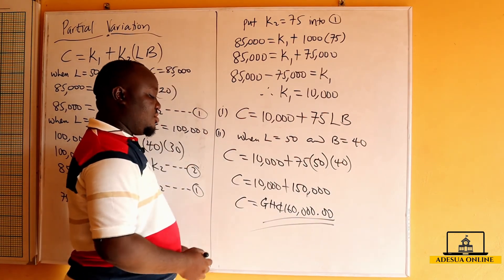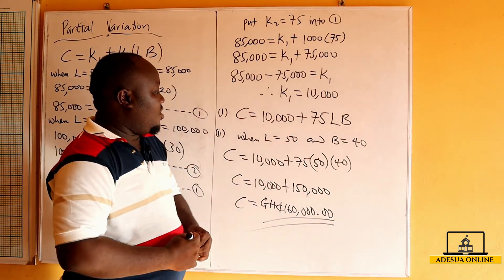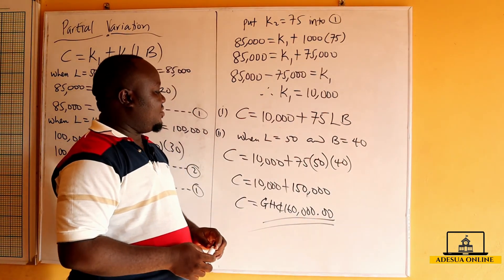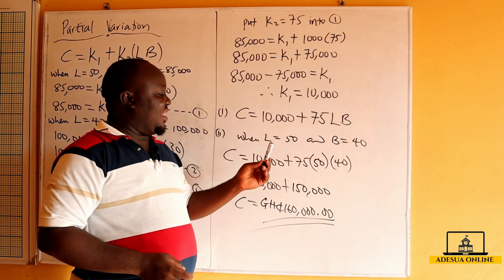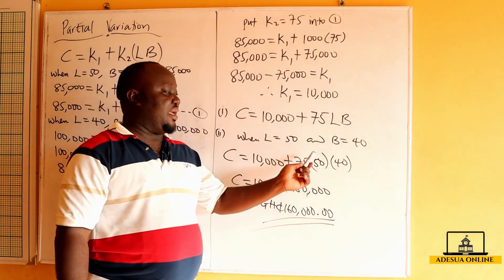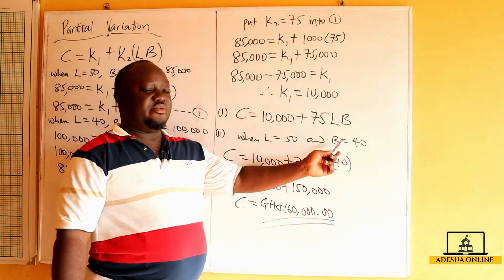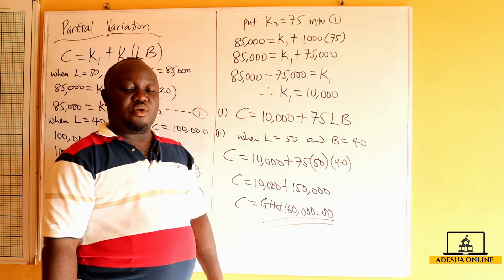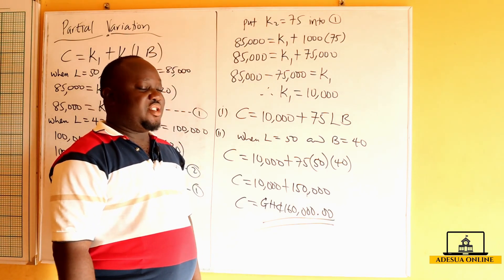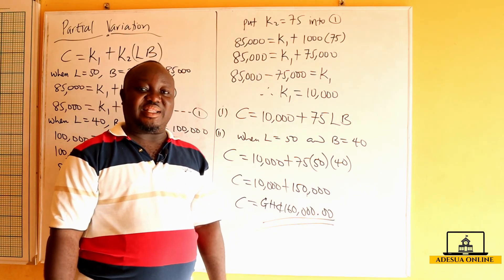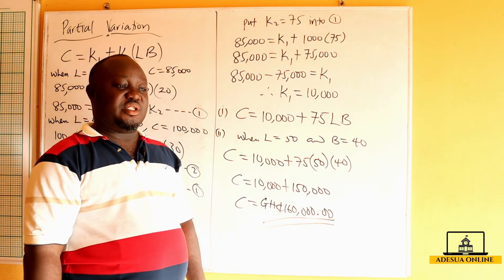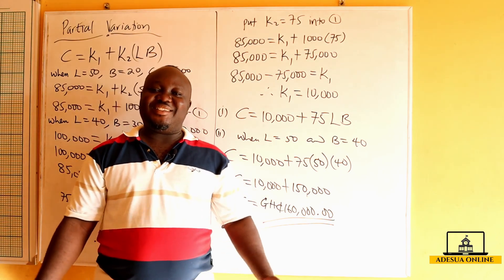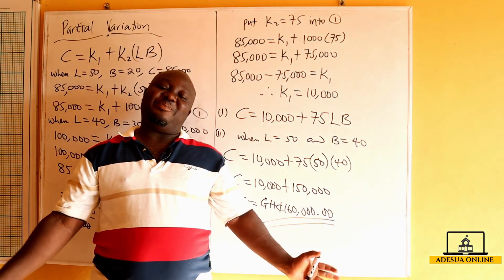So the cost of weeding a plot of land of length 50 meters and breadth 40 meters is 160,000. With this, we can solve more questions under partial variation. Until we meet again, see you next time.